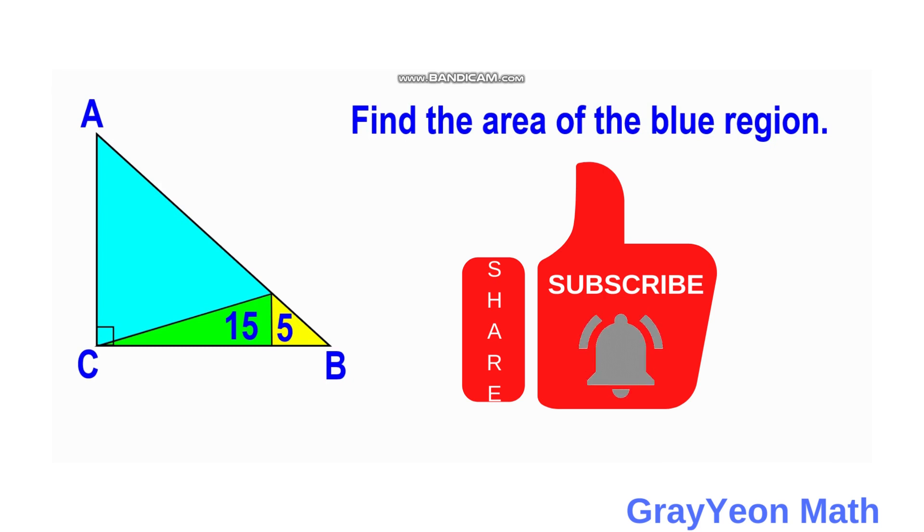We have a triangle ABC and inside this triangle is divided into three regions: a blue, a green, and a yellow one. The yellow one has an area of 5 square units while the green has an area of 15 square units, and we are to find the area of the blue region.